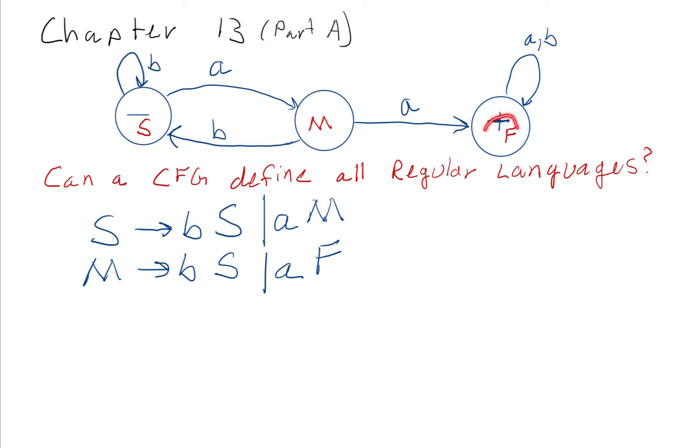Now finally, if we're in state F and we read an A, we go to state F. Or if we read a B, we go to state F. State F happens to be one of our final states.